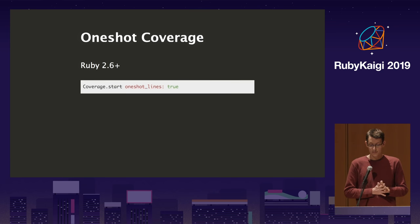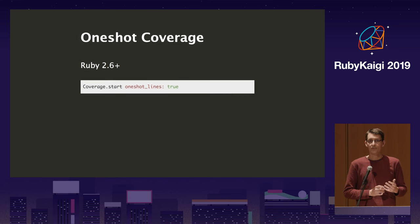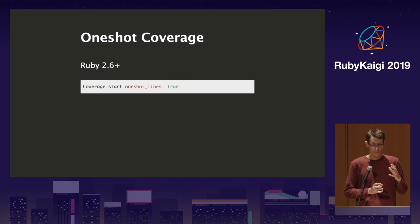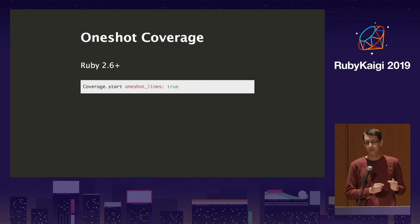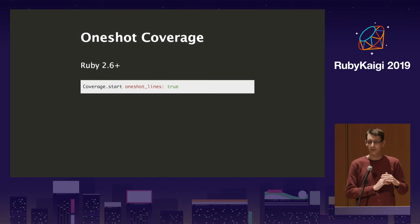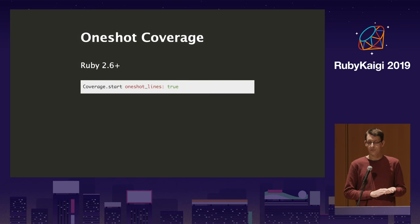One nice addition from Ruby 2.6 is one-shot coverage. This is very nice because it removes the performance penalty of coverage calculations. The first time a line is hit, it removes the C-level hooks that track coverage. You pay the penalty once and then everything after is free. This is really useful for production-level monitoring, because usually you just care whether code is dead code or still used.